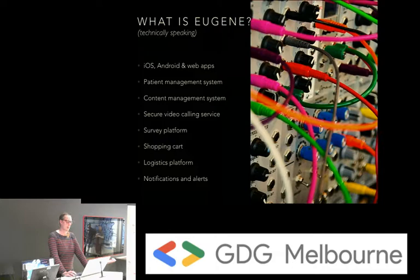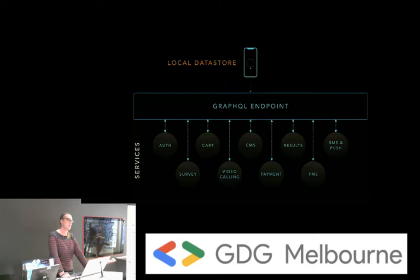We use AppSync to simplify this. Our app has a local data store which talks to a single GraphQL endpoint hosted on AWS, and all of our services are aggregated by this GraphQL endpoint. So it's nice and neat, even though we have so much going on.